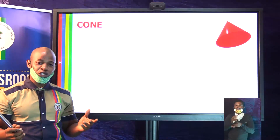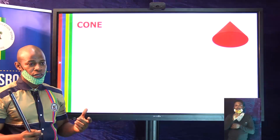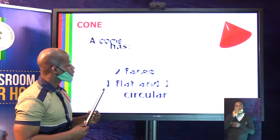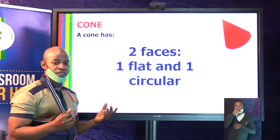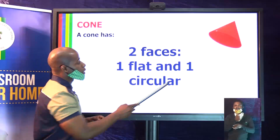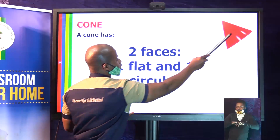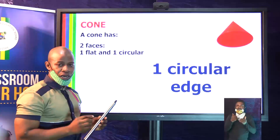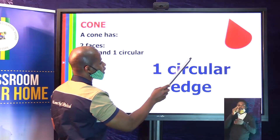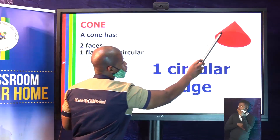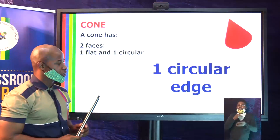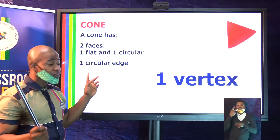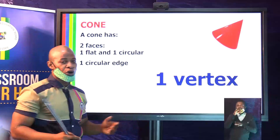The next three-dimensional shape to consider is a cone. It has two faces: one flat face at the base and one circular curved face around the body. It has one circular edge, found at the base. As for vertices, there is just one — at the top — and no other vertex.